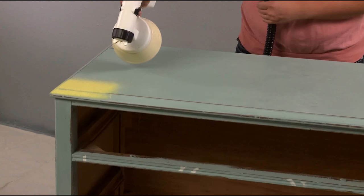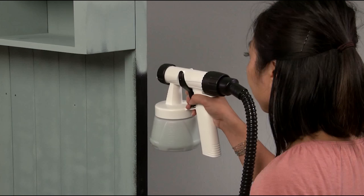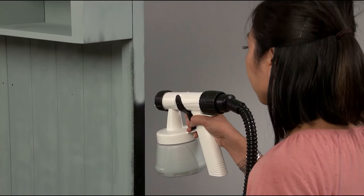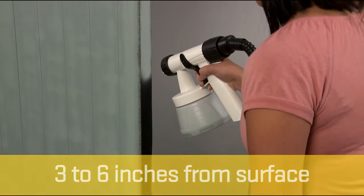Once your material flow and spray patterns are set, there are three things to remember when spraying. Number one, get the sprayer closer to the surface. You should be three to six inches from the surface you're spraying.